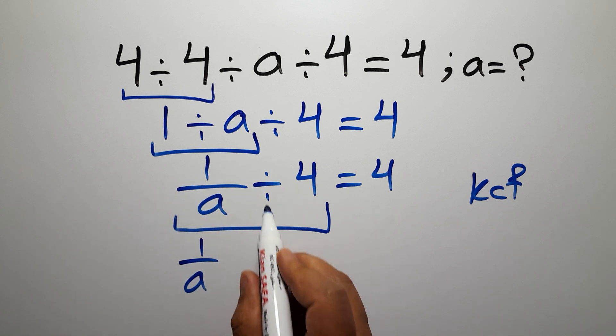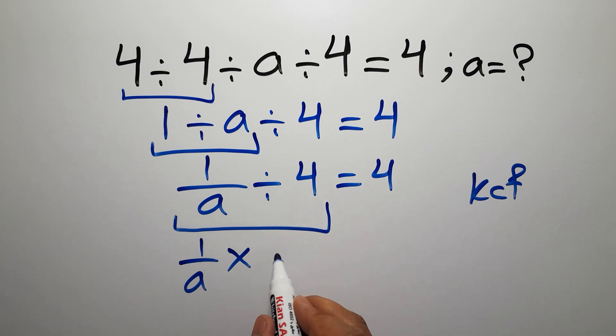Keep the first fraction 1 over a, change division to multiplication, and flip the second fraction. 1 over 4 will equal 4.